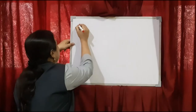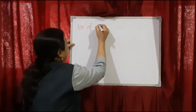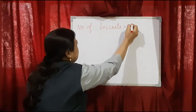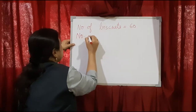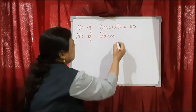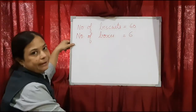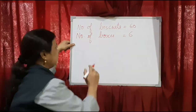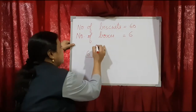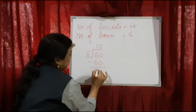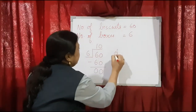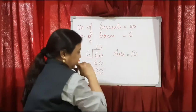So we make two statements first. Number of biscuits — how many? 60. And number of boxes. So 60 biscuits are to be divided into 6 boxes. We need to find out how many biscuits fit in a box. Here also we will make the division house: 6 tens are 60. So in one box there will be 10 biscuits. Write down the answer: 10 biscuits.